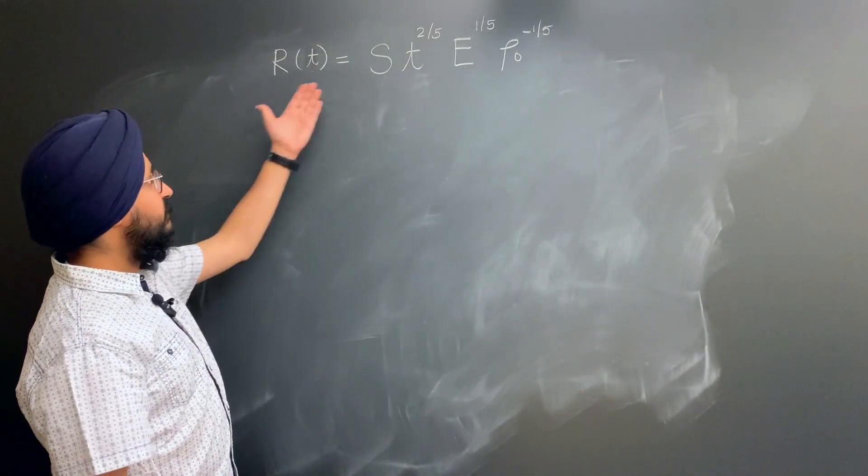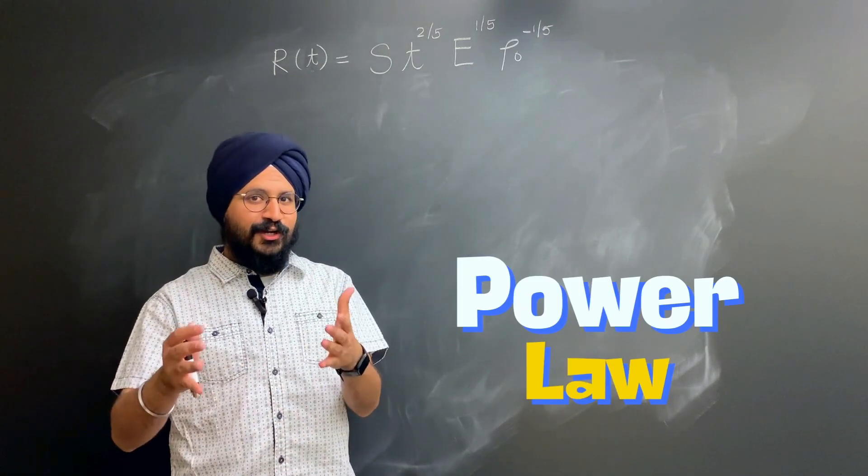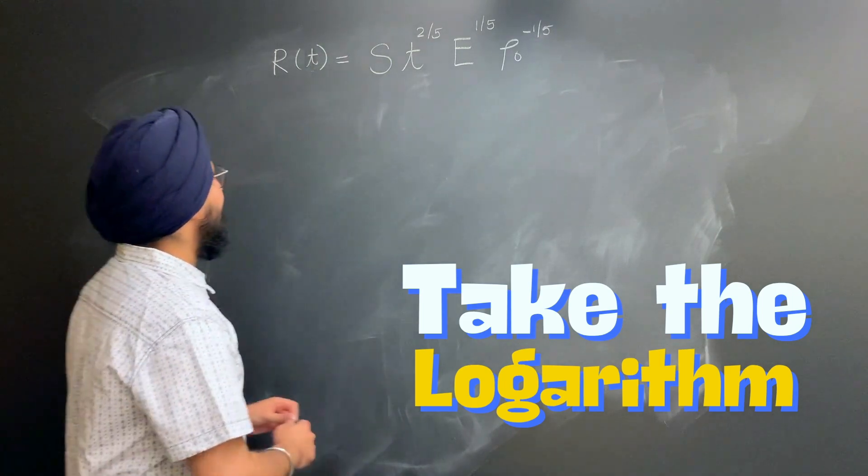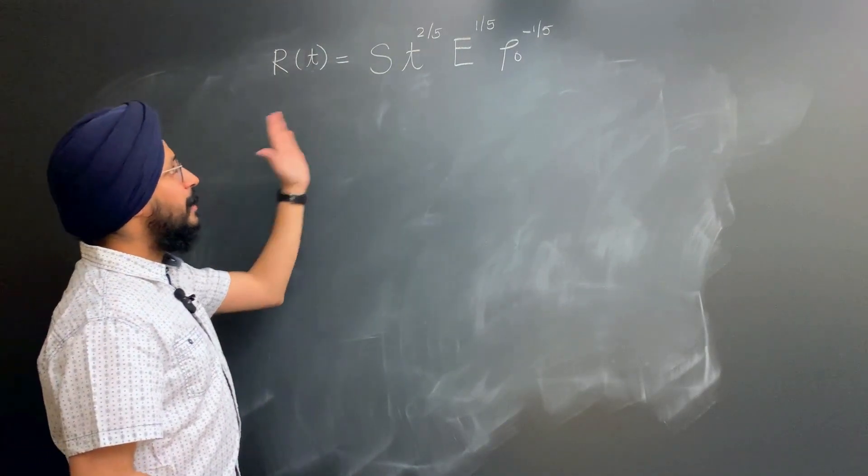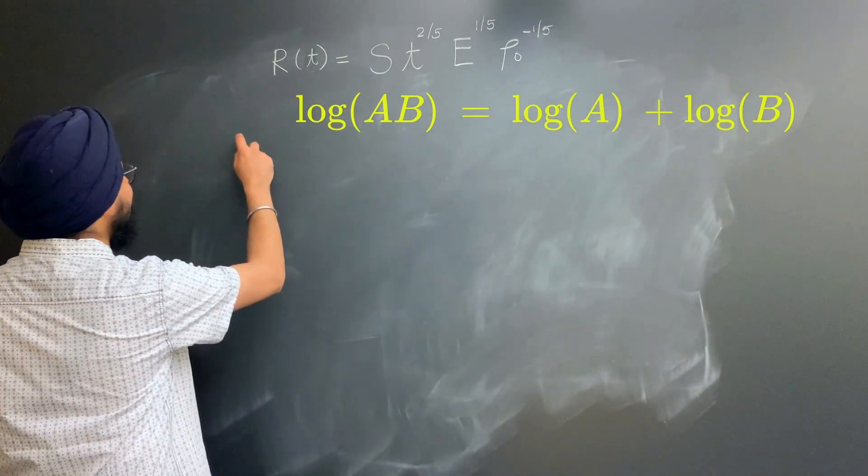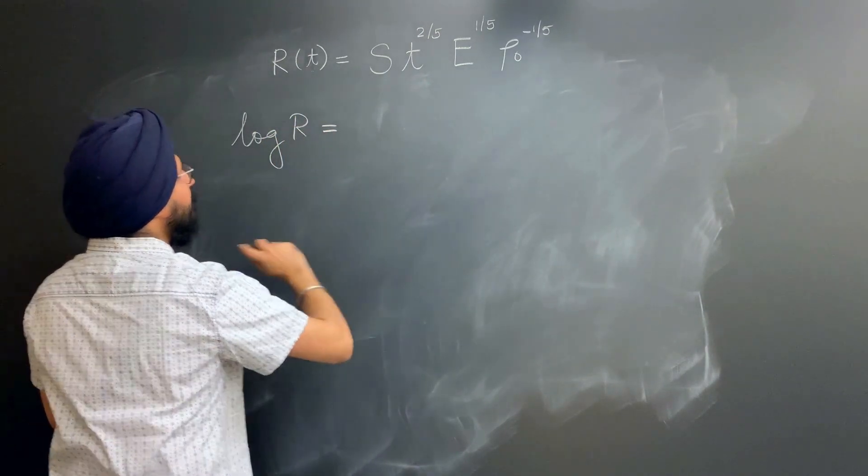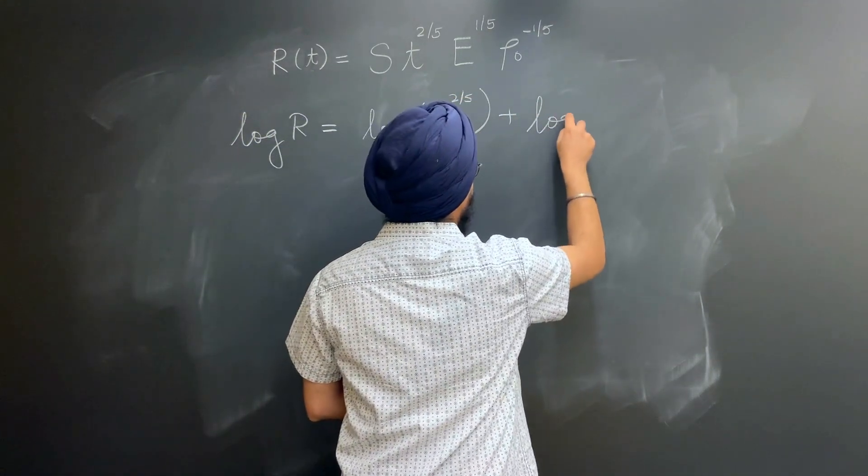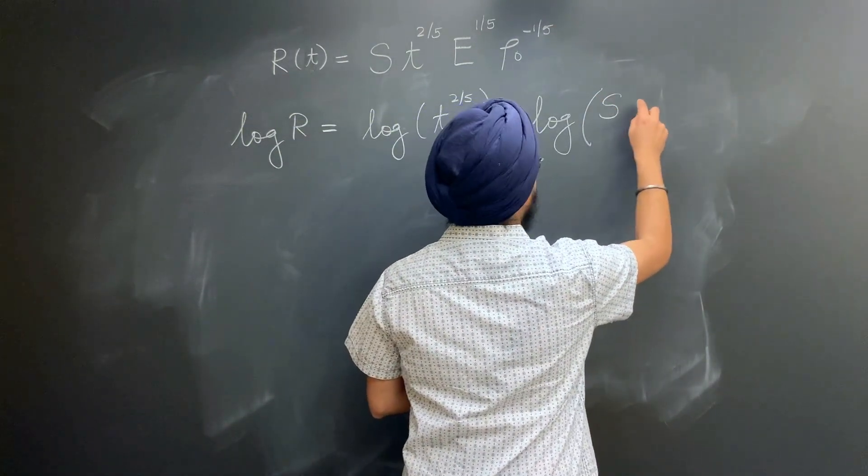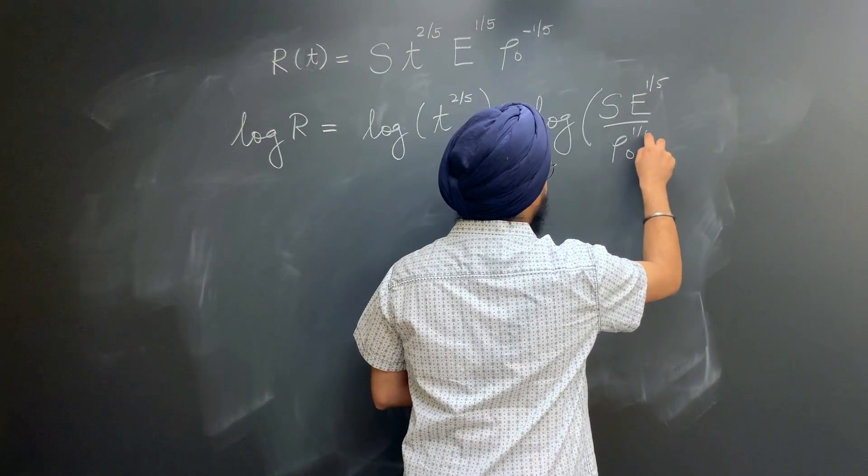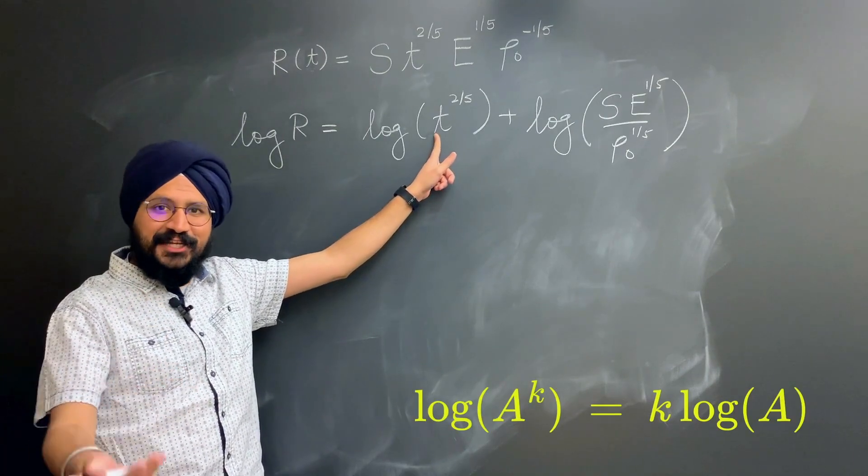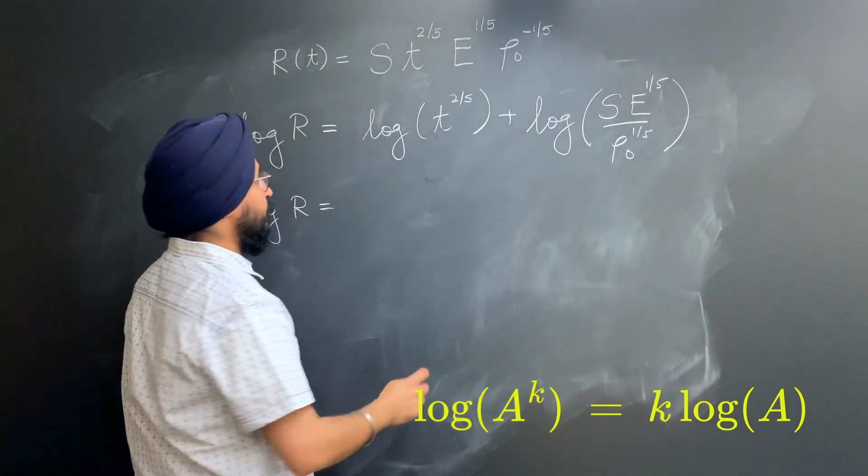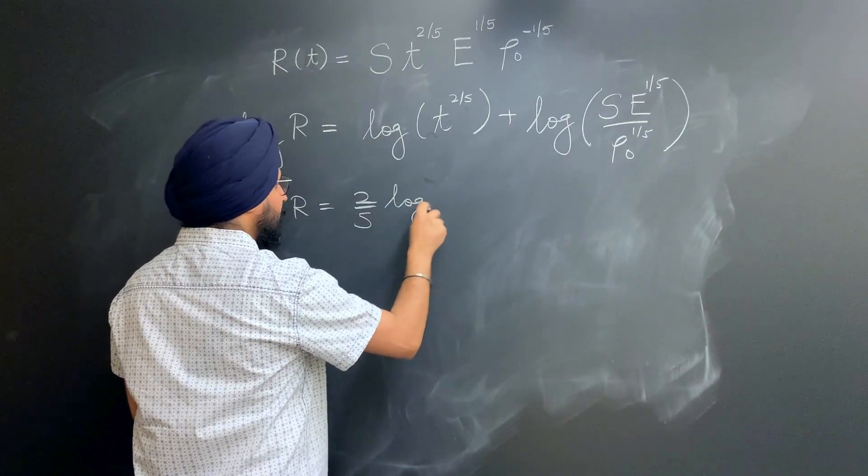Our functional form for r as a function of time is a classic power law form. And power laws are often tricky to work with. So we'll do what every first-year undergrad in physics does: take the log on both sides. Now remembering the property of logs that they convert multiplicative elements into additive elements, what we get is that log of the radius will be log of time to the 2/5 plus log of, I'm going to keep everything else combined together, s energy to the 1/5 divided by rho not to the 1/5.